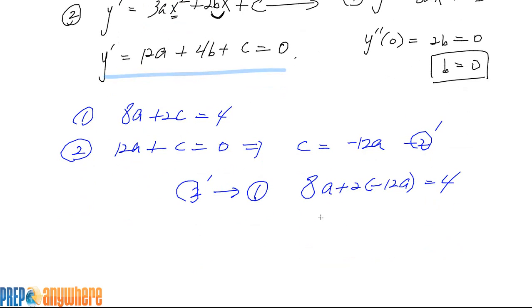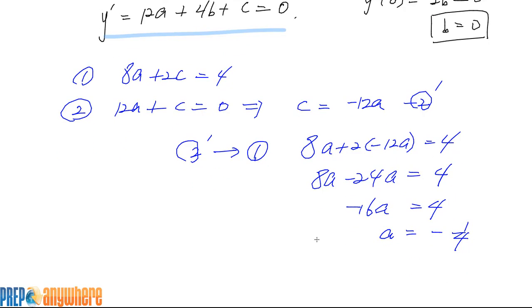We can solve for a now. So we get 8a minus 24a equals 4. So minus 16a equals 4, so a is going to be minus 1 over 4. If a is minus 1 over 4, put that right in there, you're going to get c is equal to 3.